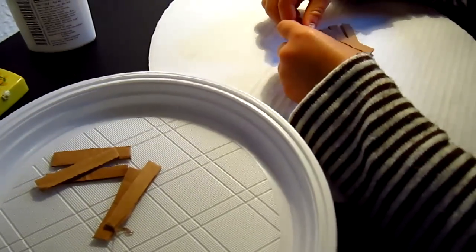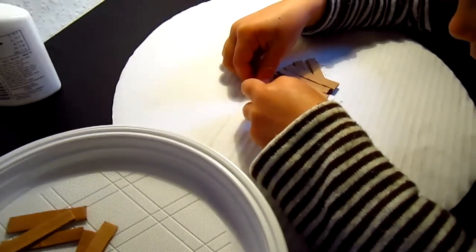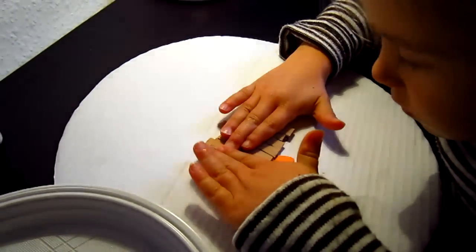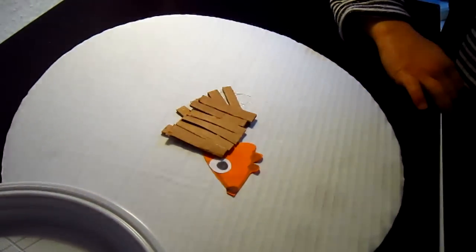Then we cut out a little piece of cardboard and put some glue. She's lining it all up nicely to make the little hedgehog.